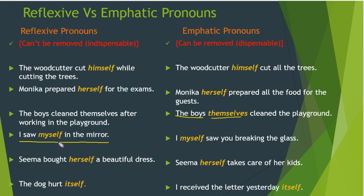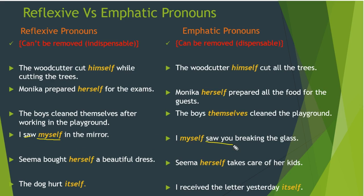'I saw myself in the mirror' — who saw? I. Who was seen? Myself — the same person. So 'myself' is a reflexive pronoun here, and it is essential: 'I saw in the mirror' is incomplete — we don't know what was seen. When we say 'I saw myself', it becomes clear that I saw my own reflection. In all these reflexive pronoun sentences, the doer and receiver of the action are the same, and the pronoun is indispensable.